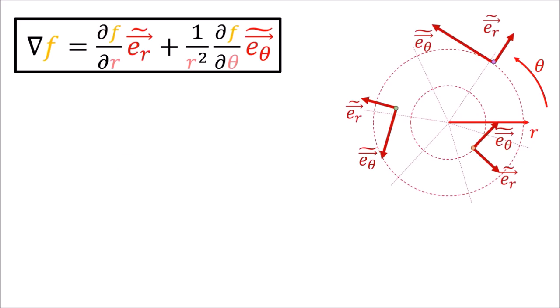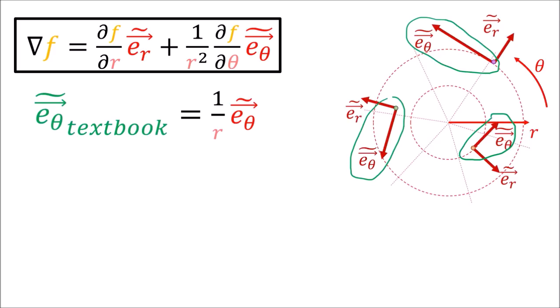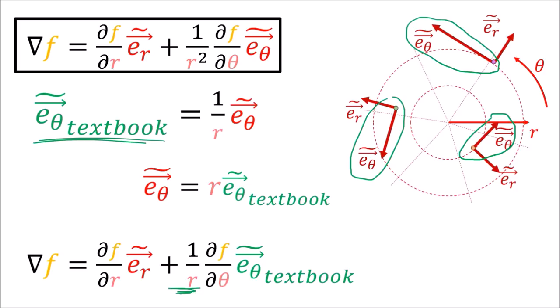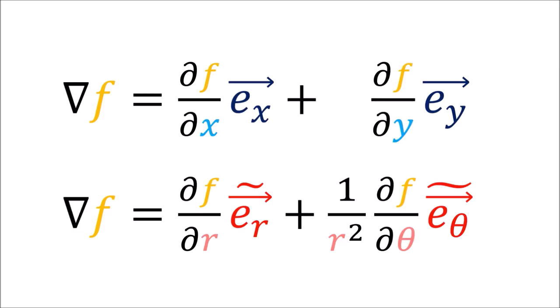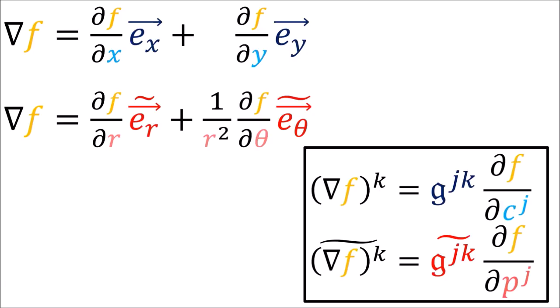My definition of the e_θ basis vector is not normalized — it gets longer as we move farther from the origin. Many textbooks normalize the e_θ basis vector by dividing by r, and with that definition you'd end up with only 1/r instead of 1/r². The point is that the formula for del f, the gradient of f, looks like a linear combination of basis vectors with these partial derivatives, but depending on the coordinate system we might have extra terms like this 1/r² in polar coordinates. These extra multiplying terms come from the components of the inverse metric tensor.